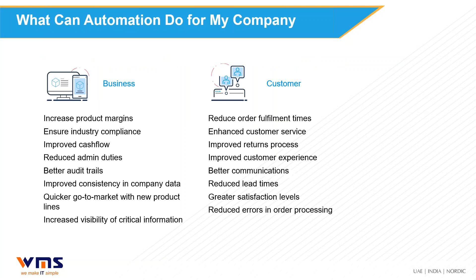These are some of the things automation can do for your company. You might increase your product margins because it costs less time and money to serve the client. You can ensure compliance, improve your cash flow, automate credit control, and cut administration — manual data re-entry, creation of reports, automated letters to customers, and better audit trails. Automation gives much higher visibility of critical information because you're bringing all systems together — for example, tell me when a project is within 10% of budget, send me an email when I'm running out of stock, or tell me when my customers are renewing.